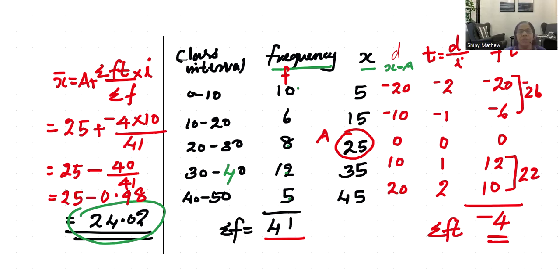The arithmetic mean is the same using all three methods. We can calculate it by direct method, shortcut method, and step deviation method. All three give the same result.